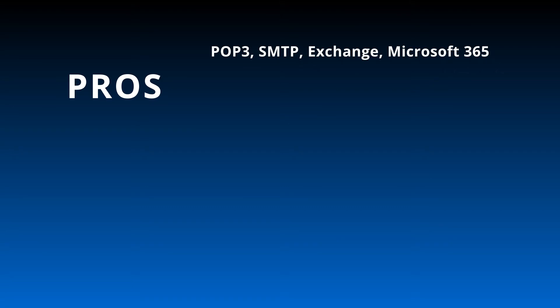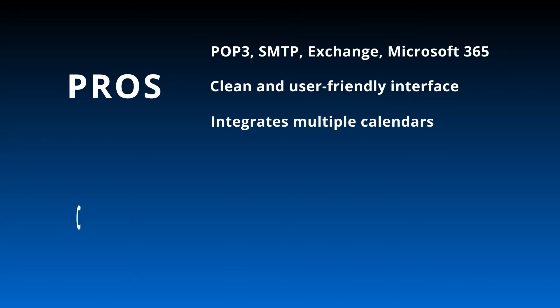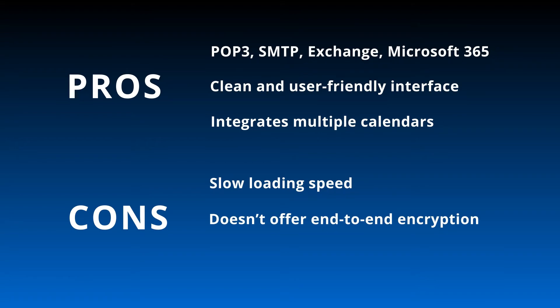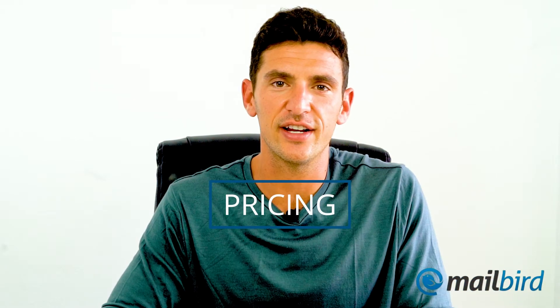With a 4 out of 5 rating, eM Client is valued for its unified inbox, app integrations, and simple minimalistic design. Benefits include support for POP3, SMTP, Exchange, and Microsoft 365, a clean user-friendly interface, and multiple calendars integrated in one place. Disadvantages are slow loading speed with large inboxes, no end-to-end encryption, and limited integrations. There's a 30-day trial; the free version allows only two email accounts. Additional accounts require an individual or business plan starting at $49.95.